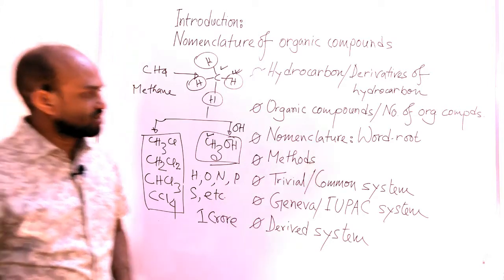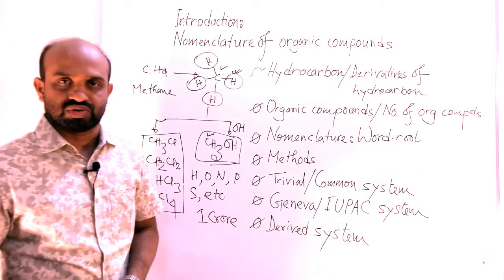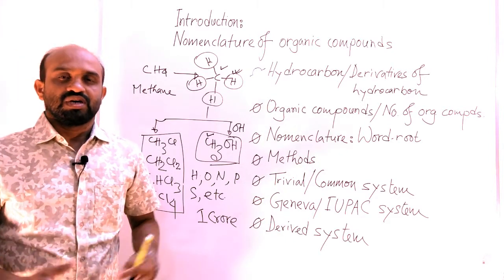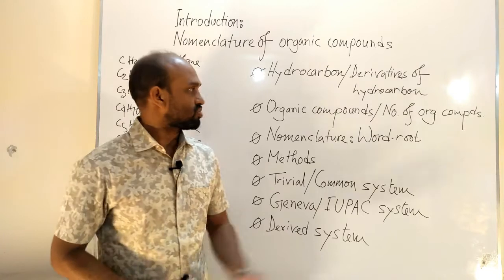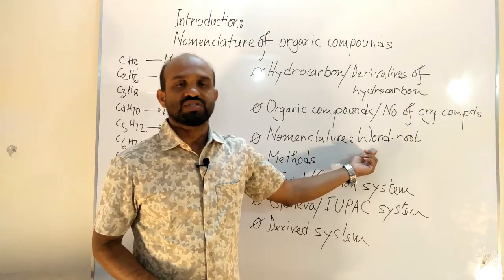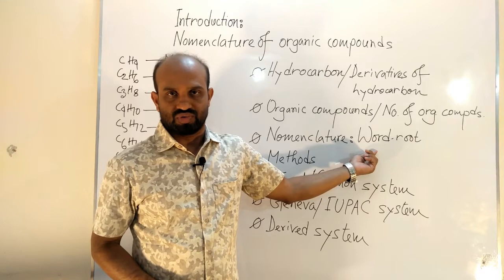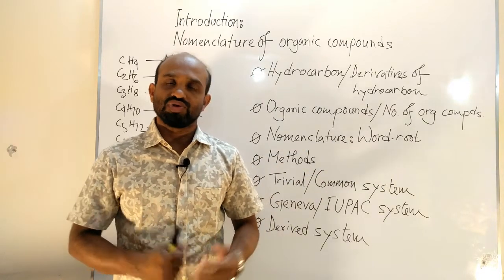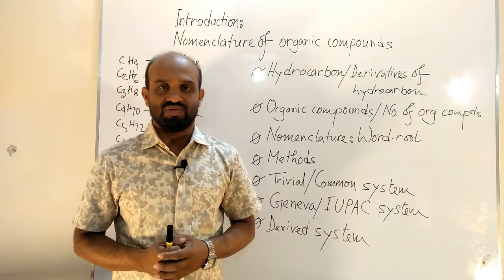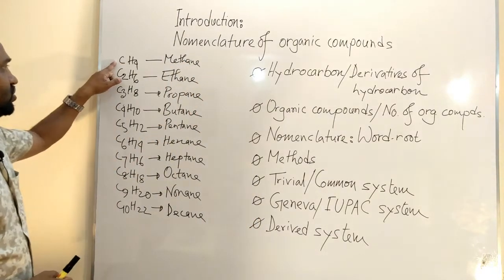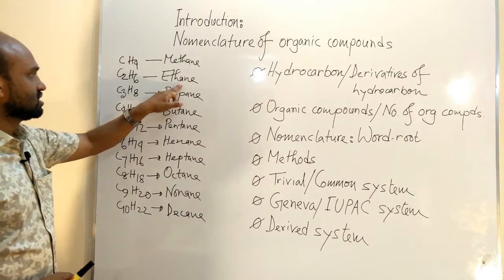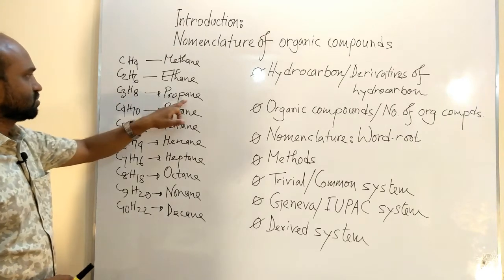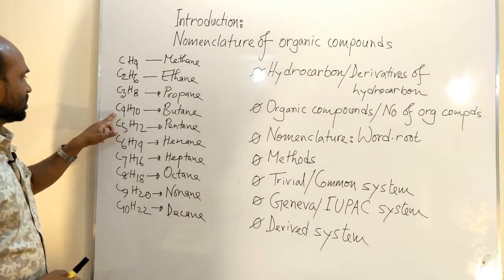Another point we have to learn here is word root. We should actually memorize these compounds: CH4 is methane, C2H6 is ethane, C3H8 is propane, C4H10 is butane. Word root is very important to name the organic compounds.